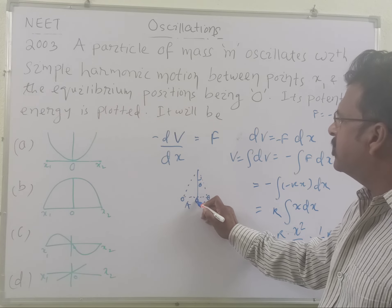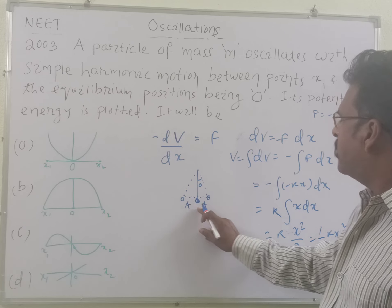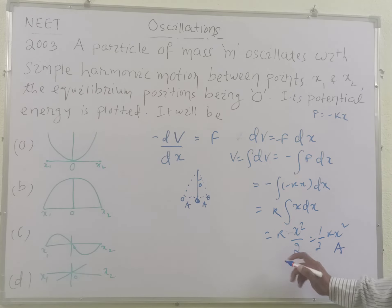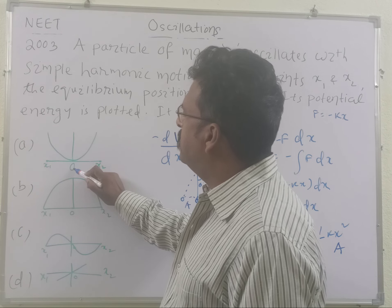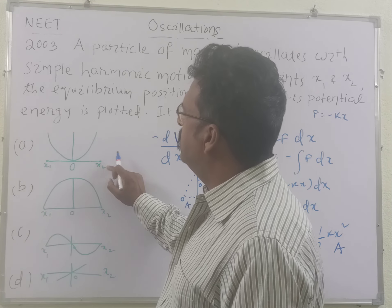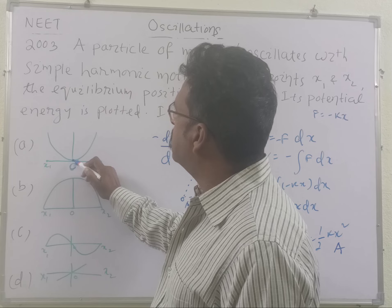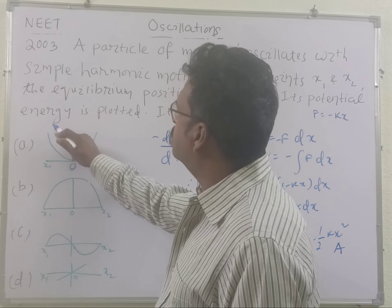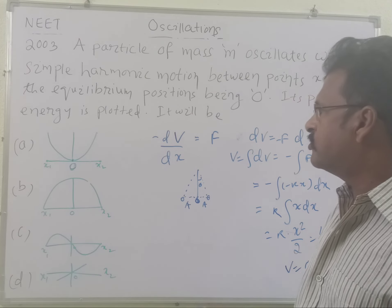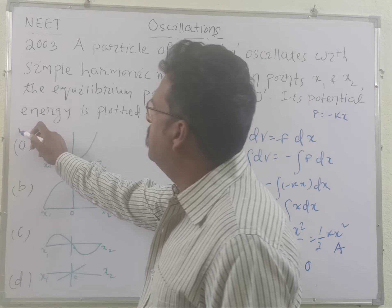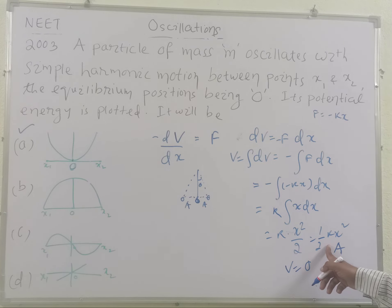And what about the potential energy here? Here X is equal to 0, so V will be equal to, obviously, X square will be 0, V will be equal to 0 at this mean position. So you see, this plotting, this graph has at O it is 0, the potential energy, and at X1 and X2 this is extreme and increasing in this way. So the plot A is correct. That is the plotting of half K X square. So option A is correct for this question.